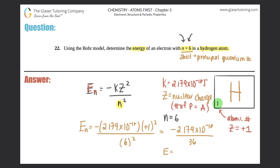And now we just plug in. So negative 2.179 times 10 to the negative 18th divided by 36, I'll round to three sig figs, so we get negative 6.05 times 10 to the negative 20th, and that is in joules. And that's the answer to this question.